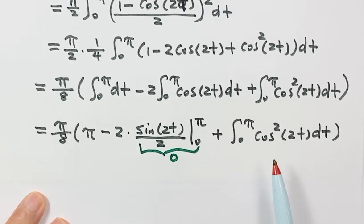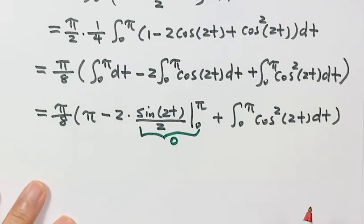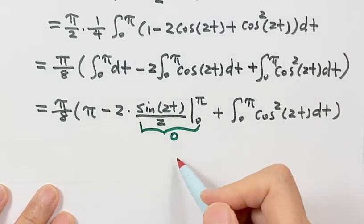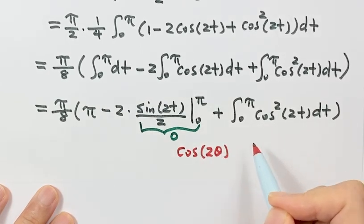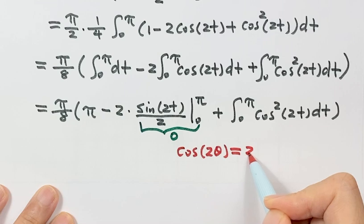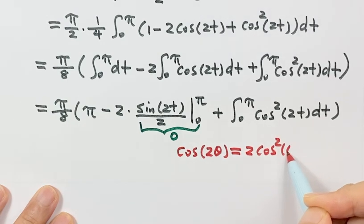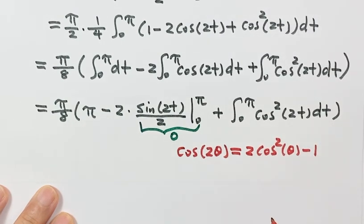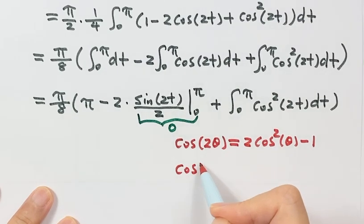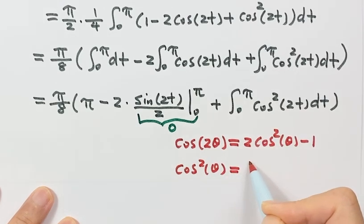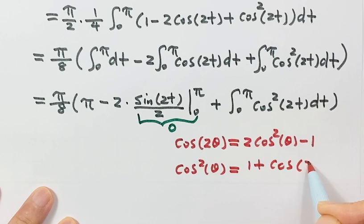Now we need to work on the remaining cosine squared 2t part. We need to reduce the power again using the double angle formula involving cosine squared: cosine 2θ equals 2 cosine squared θ minus 1. Solving for cosine squared gives cosine squared θ equals (1 plus cosine 2θ) over 2. We apply this formula where θ equals 2t, so cosine squared 2t equals (1 plus cosine 4t) over 2, times dt.